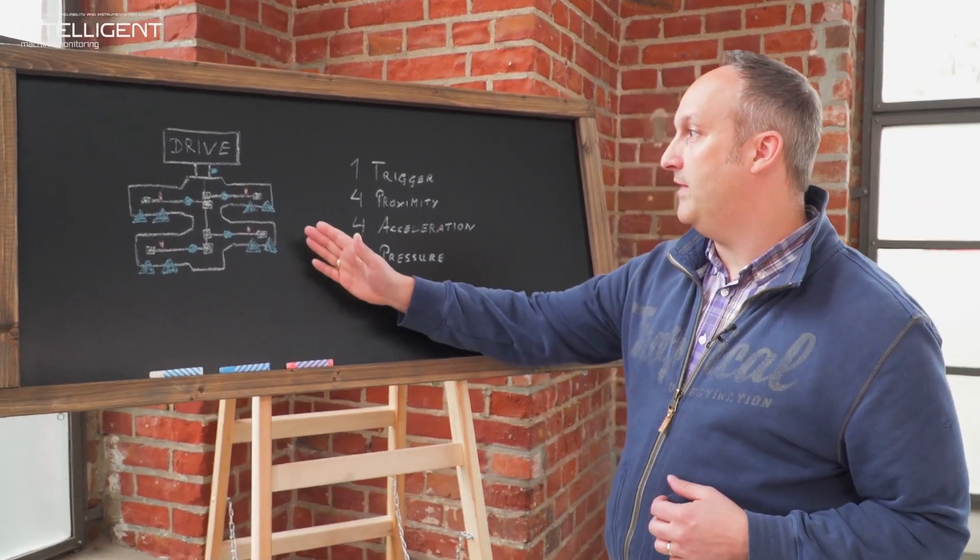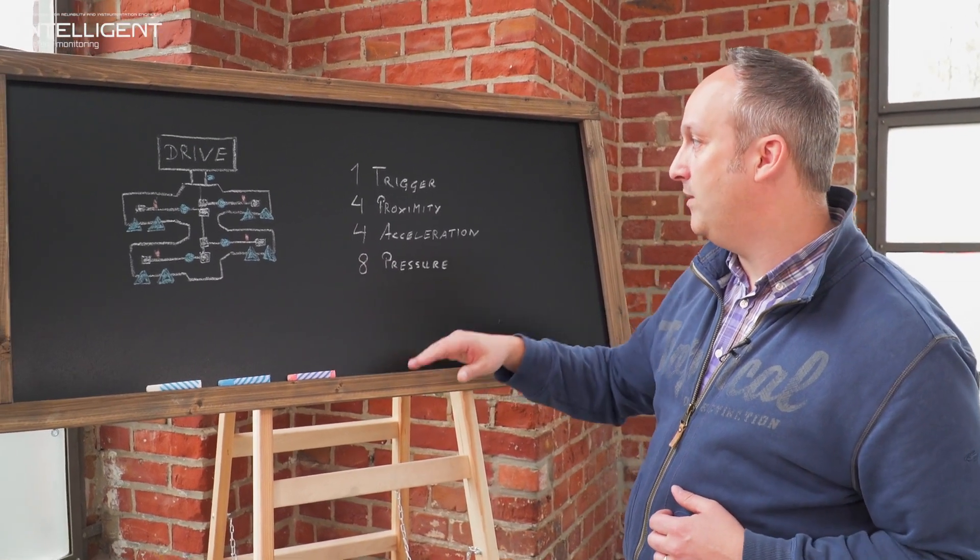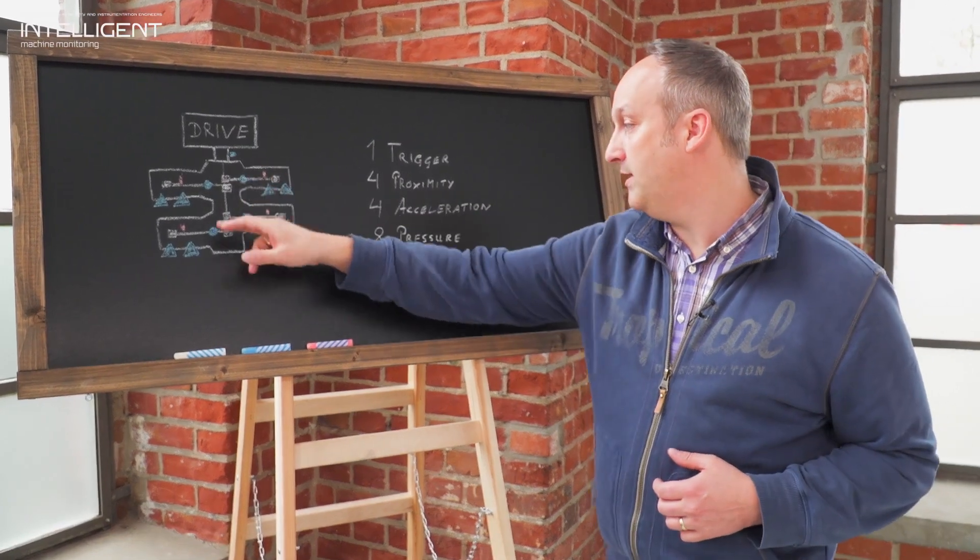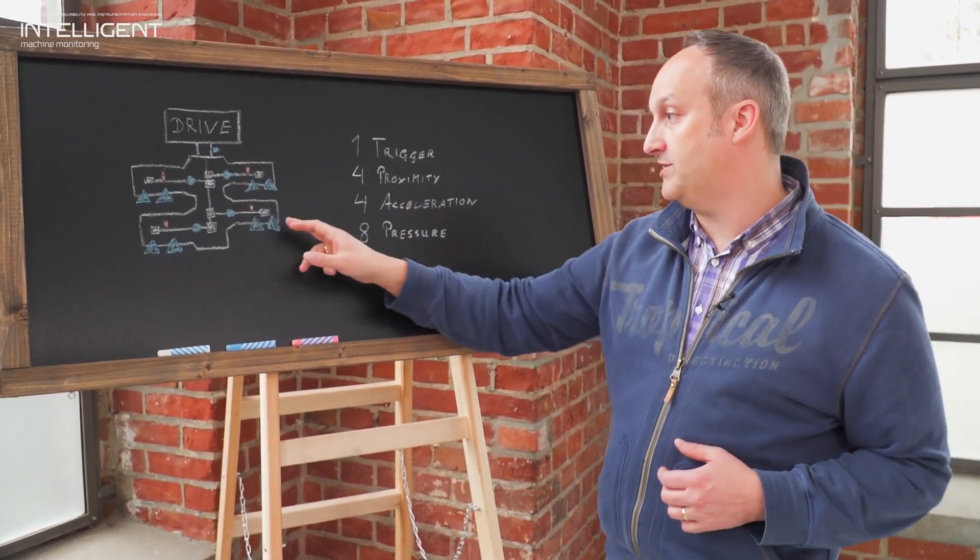We will have here a fourth row compressor with the sensors for trigger, proximity, acceleration, and also the dynamic pressure sensors.